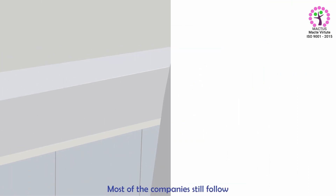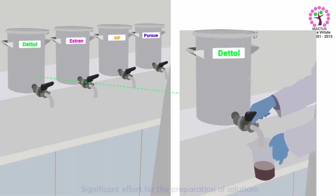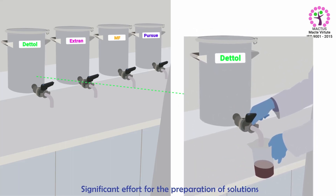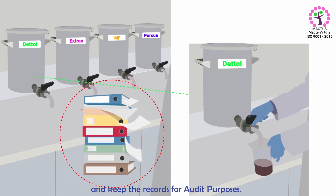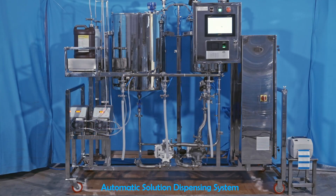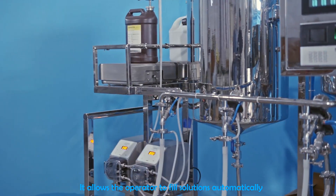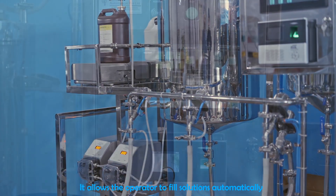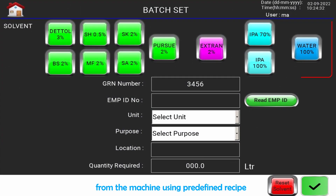Most companies still follow manual preparation of solutions. The manual process involves significant effort for the preparation of solutions and keeping records for audit purposes. The Automatic Solution Dispensing System provides a solution to this problem, allowing the operator to fill solutions automatically from the machine using a predefined recipe.